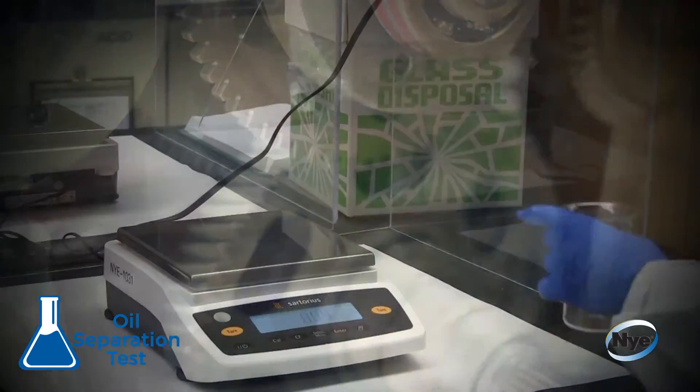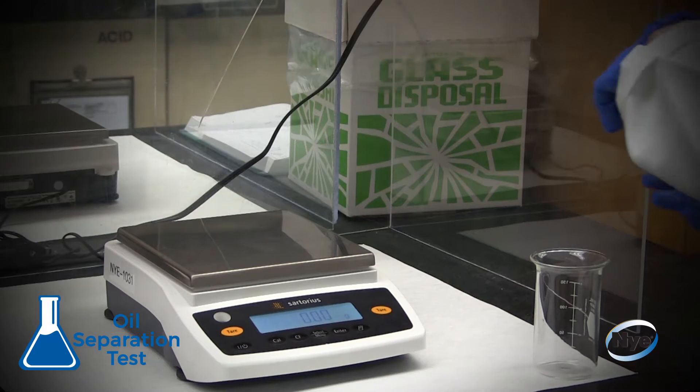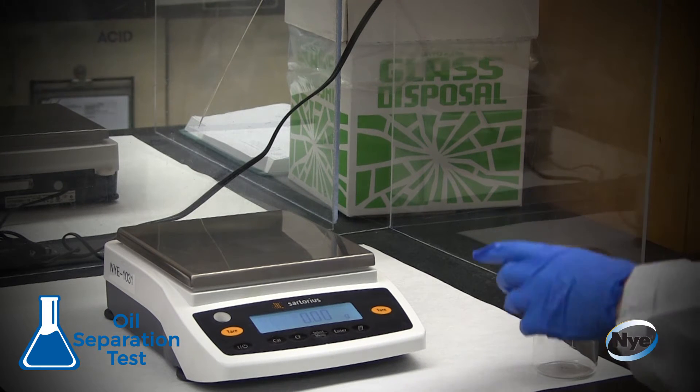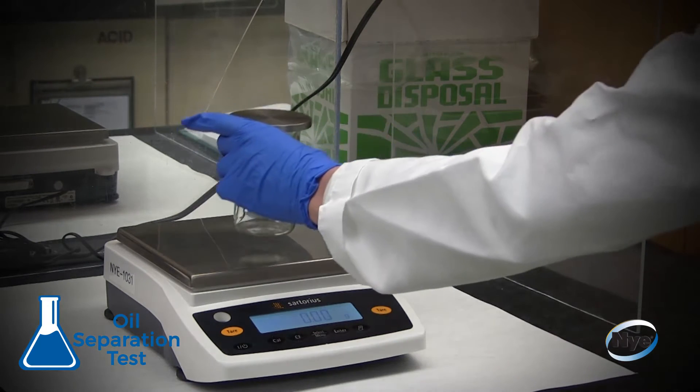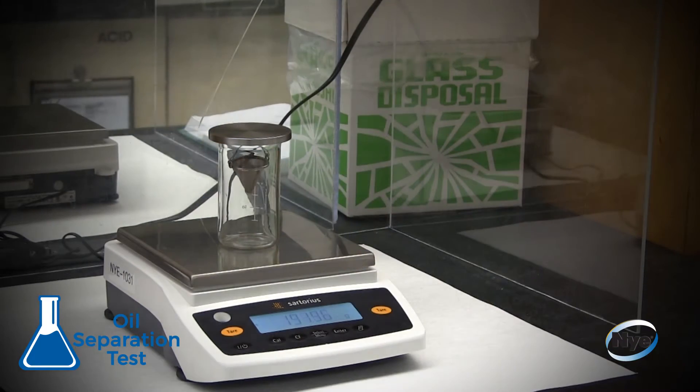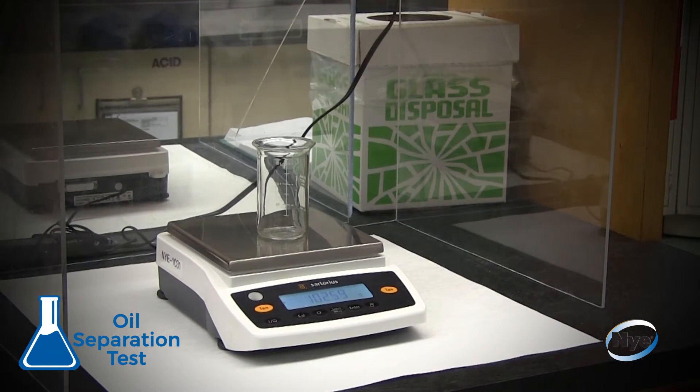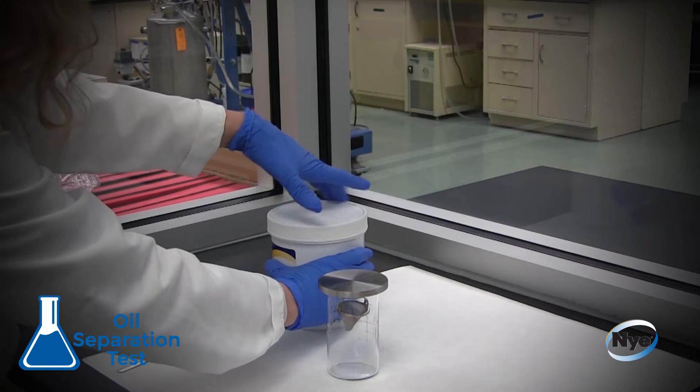Following ASTM method specifications, the test begins with a technician weighing the empty oil separation apparatus on a scale and recording the value. Next, the technician weighs and records the empty beaker of the oil separation apparatus.